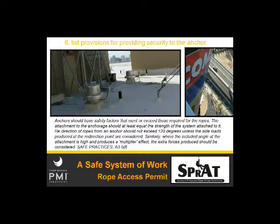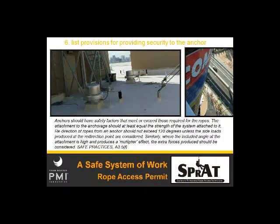Providing security to the anchors is something we really want to pay attention to. Not only do we want to make sure the anchor itself is secure and safe and exceeds the strength we need, we want to make sure we're rigging properly — we don't want big angles in our systems, we want back ties wherever necessary. And if other people have access to the roof, for example, and could stumble across these anchors, making sure there are safety provisions so nobody can interfere with them is a really important part of the anchor process.